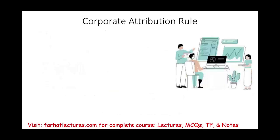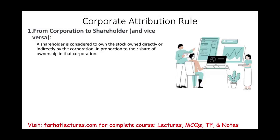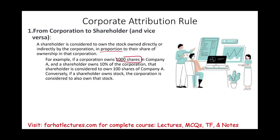You can also be connected through corporate attribution rules — from corporation to shareholders and vice versa. A shareholder is considered to own stock held directly or indirectly by a corporation in proportion to their ownership share. For example, if a corporation owns 1,000 shares of Apple stock and shareholder A owns 10% of the corporation, that shareholder is deemed to own 100 shares of Apple. Conversely, if the shareholder owns the stock, the corporation is also considered to own it.